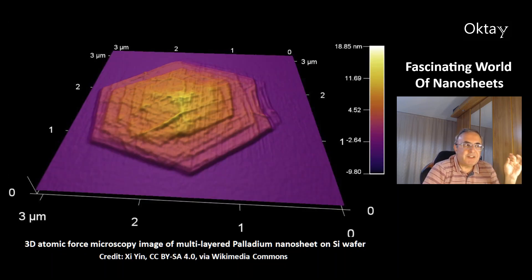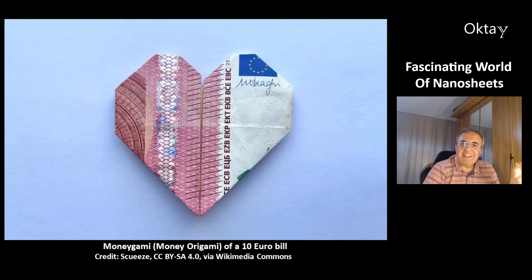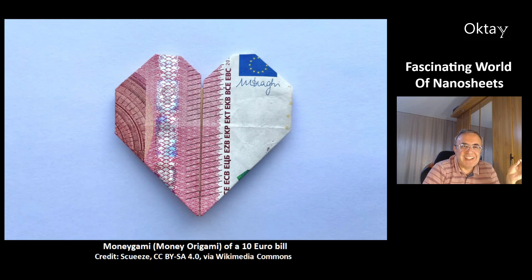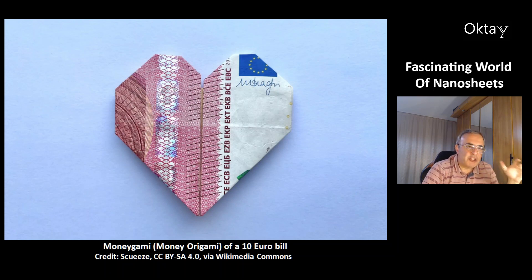This is a 3D atomic force microscopy image of multilayered palladium nanosheets on a silicon wafer. And this — in my opinion a funny picture — is called a money-gami, an origami made from a 10 euro bill. That was today's video about the fascinating world of nanosheets. You can check out the links in the description field. Thank you for watching, have a nice day, bye bye.